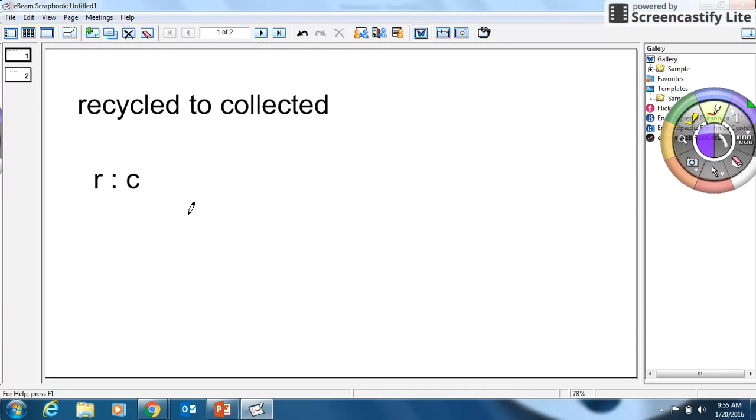Okay. So recycled to collected. R to C. So recycled to collected. They recycled three bottles for every four they collected. All right. Another way I can write this is three over four. I can make it a fraction.